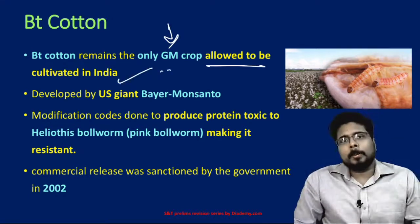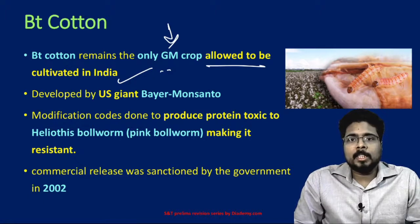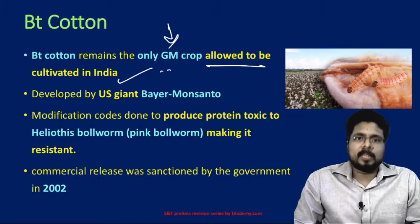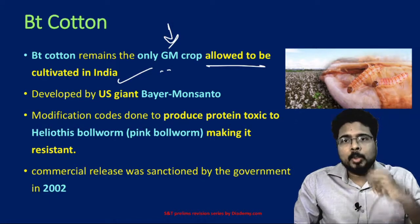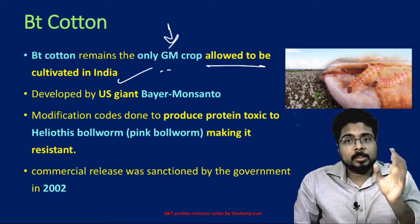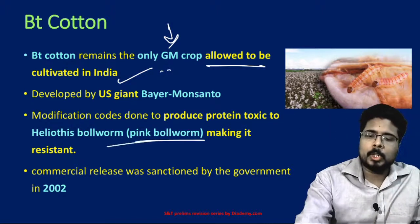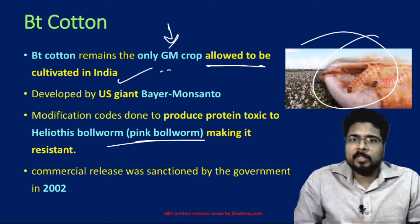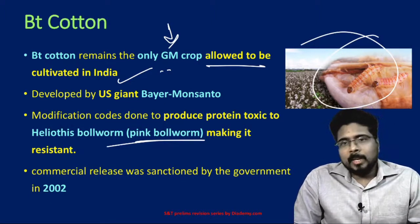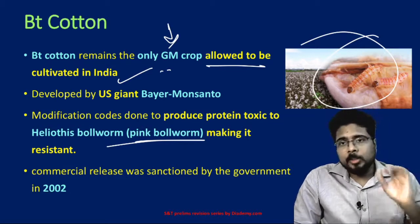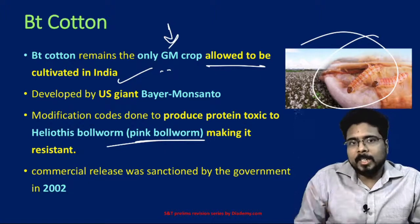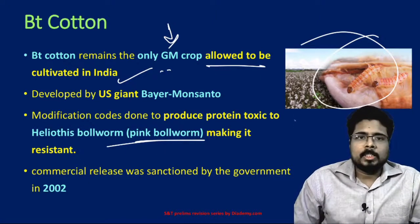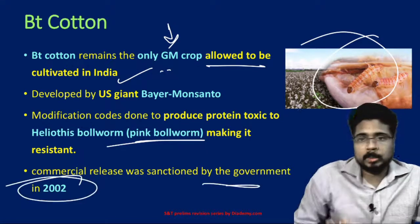BT cotton remains the only GM crop allowed to be cultivated in India. It is developed by the US giant Bayer Monsanto, a very large company that also manufactures a lot of seeds. The modification is done in such a way that BT cotton produces a toxic protein that is toxic to the pink bollworm, a very big problem for cotton farmers. When the pink bollworm consumes the crop it dies. The commercial release was sanctioned by the government in 2002.